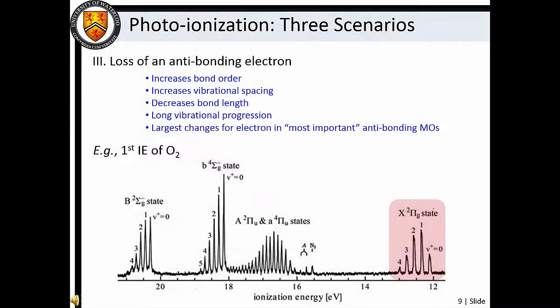The third scenario is removal of an antibonding electron. In this case, the bond order increases, as does vibrational spacing and dissociation energy for the ion compared with the neutral. We see a reduction of bond length owing to the enhanced stability of the molecular ion. As a result, a relatively long vibrational progression is observed in the photoelectron spectrum. Again, the largest changes in bonding character are associated with removal of the most important antibonding electrons, those that are high in energy and especially destabilizing to the molecular nuclear configuration. Of course, these three scenarios only provide rough guidelines for interpretation of photoelectron spectra. There are a number of factors that can give rise to seemingly anomalous behavior.